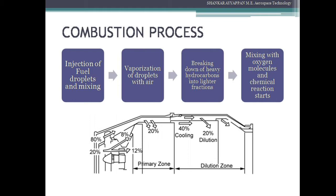In the second step, the fuel droplets are vaporized in air — the compressed air will have sufficient temperature to vaporize the fuel droplets. In the third step, there is a breaking down of heavy hydrocarbons into lighter fractions, where the heavier hydrocarbon components are decomposed or broken down into lighter fractions. In the final step, there is intimate mixing of these hydrocarbon molecules with oxygen molecules, and then the chemical reaction starts and the combustion process takes place.